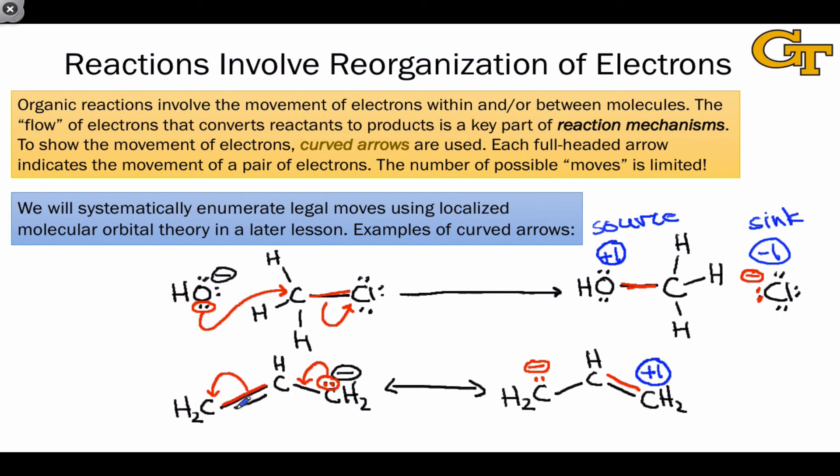The carbon atom serving as the sink on the left-hand side of the molecule goes from neutral to negative one, and so its change in formal charge is minus one. Notice that this fits the pattern from above. The sink decreases in charge by one unit, and the source increases in charge by one unit.